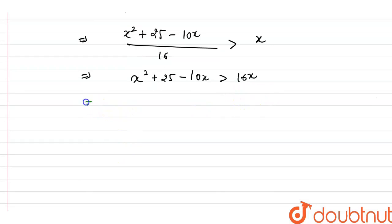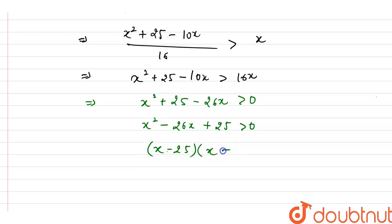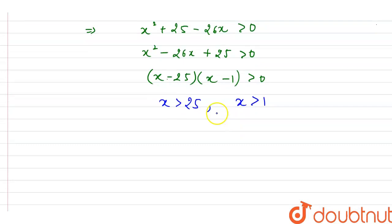Subtracting 16x from both sides: x squared minus 26x plus 25 is greater than zero. Factoring this: (x minus 25)(x minus 1) is greater than zero. From here, x must be greater than 25 or x must be greater than 1.